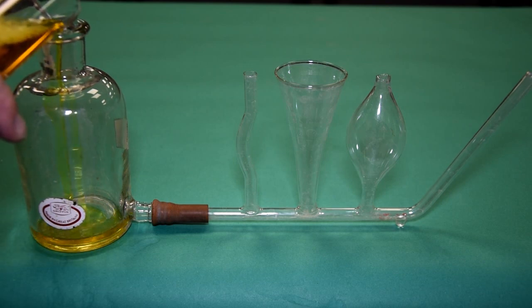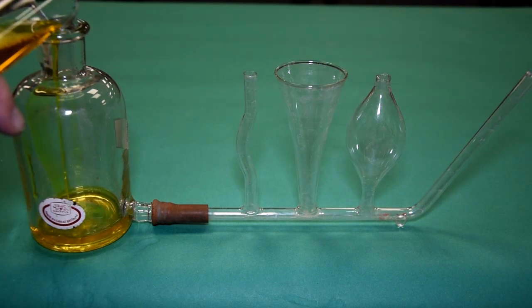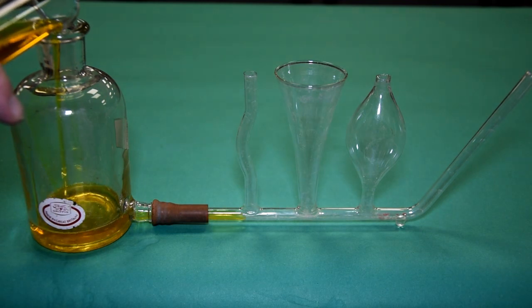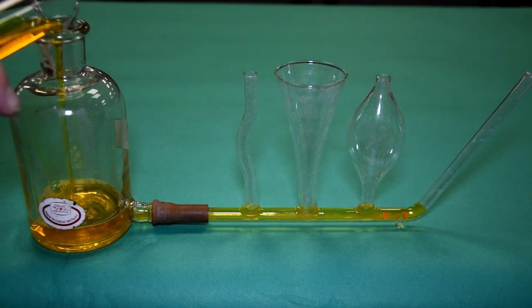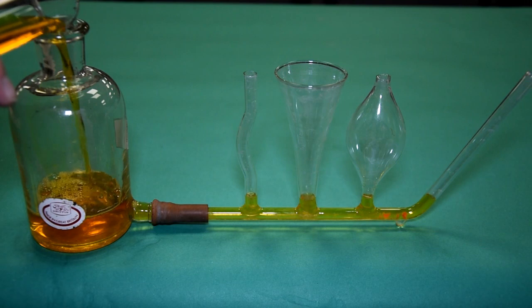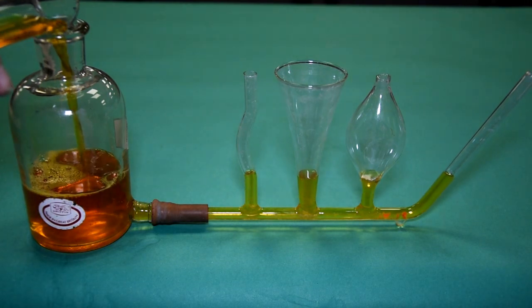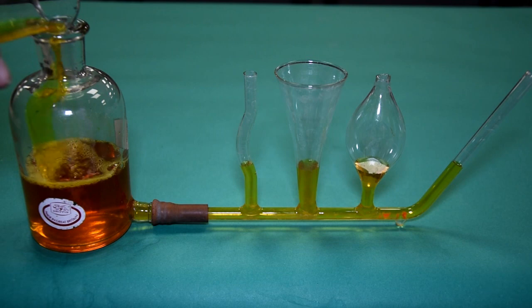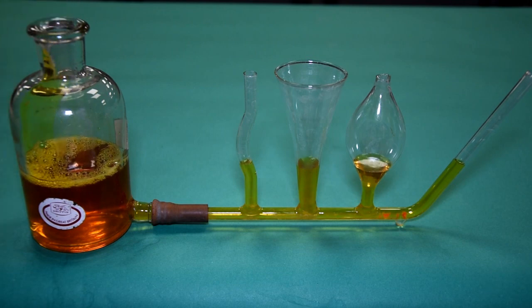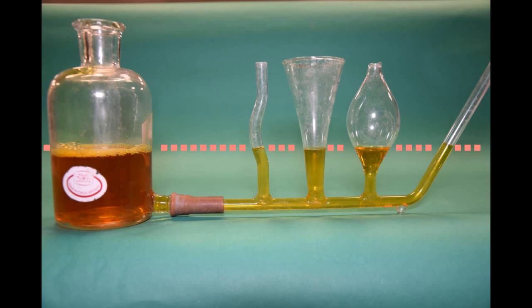And, as this demonstration shows, the air pressure is the same on the surface of the liquid, no matter what the shape of the container. The height of the liquid, shown by the dotted line, is consistent.